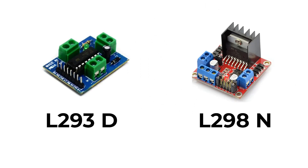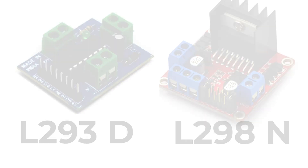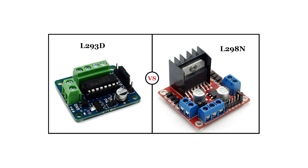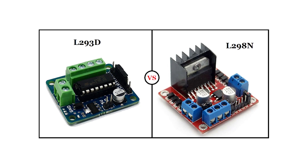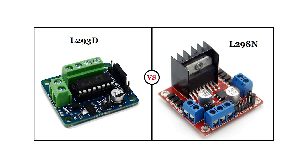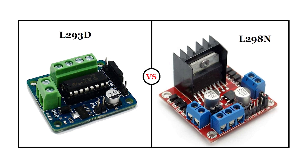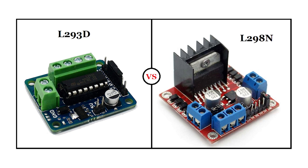Specifically the L293D and L298N — these ICs are designed to control two DC motors simultaneously, and they both consist of an H-bridge. An H-bridge is the simplest circuit to control low current rated motors. Now let's dive into the differences between these two motor drivers and which one you should pick for your application.